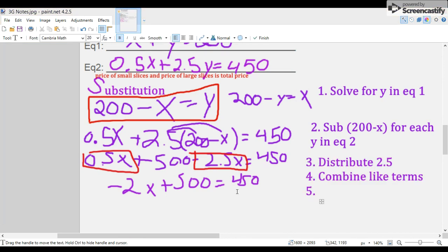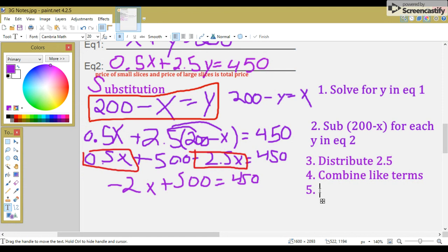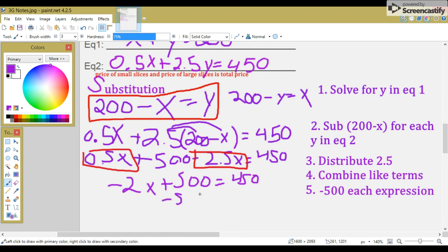From here, we want to subtract 500 from each expression. We have minus 500 and minus 500 on both sides of the equation. So, we have negative 2X equals negative 50.